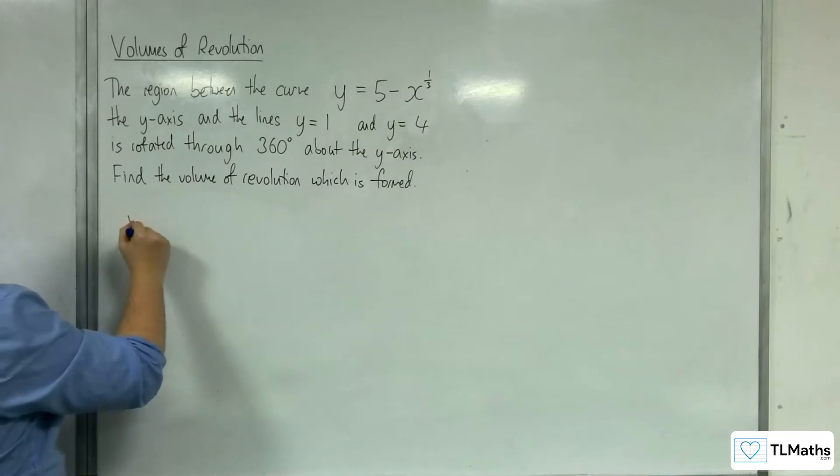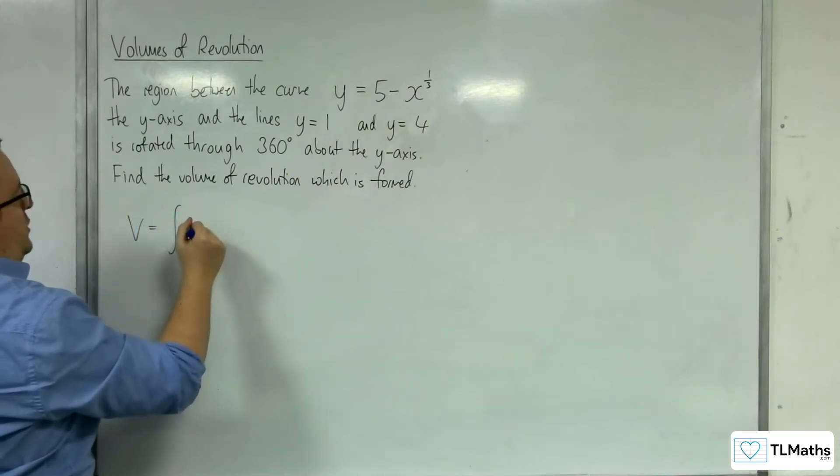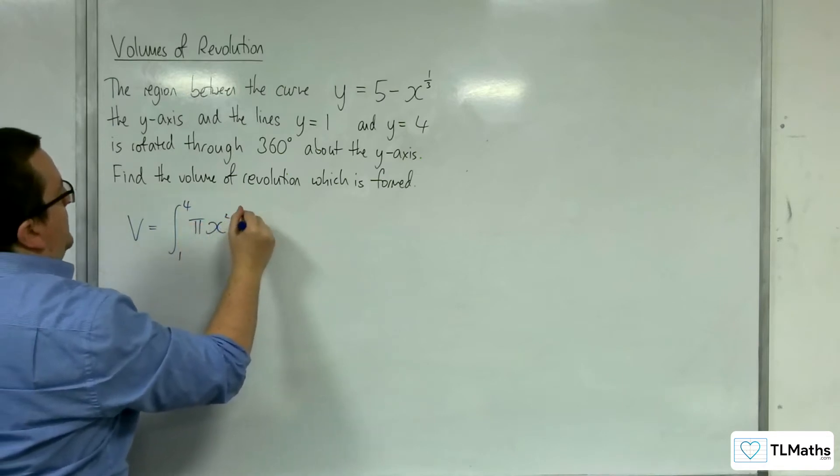Okay, so we know that the volume is going to be equal to the integral between 1 and 4 of pi x squared dy.